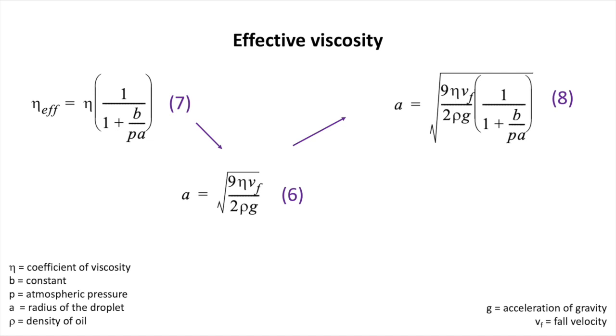It depends on a constant b, the atmospheric pressure p, and the radius of the droplet a. Now we can substitute the viscosity in equation 6 to the effective viscosity in equation 7, and get to equation 8.